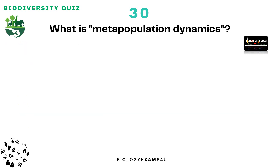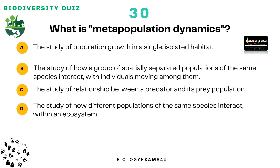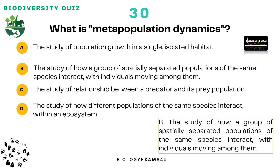The final question, number 30: What is metapopulation dynamics? Option A: The study of population growth in a single isolated habitat. Option B: The study of how a group of spatially separated populations of the same species interact with individuals moving among them. Option C: The study of the relationship between a predator and its prey population. Option D: The study of how different populations of the same species interact within an ecosystem. The answer is: metapopulation dynamics is the study of how a group of spatially separated populations of the same species interact with individuals moving among them.